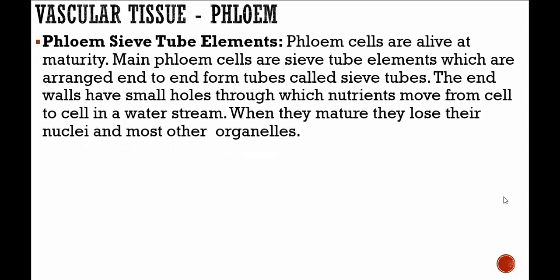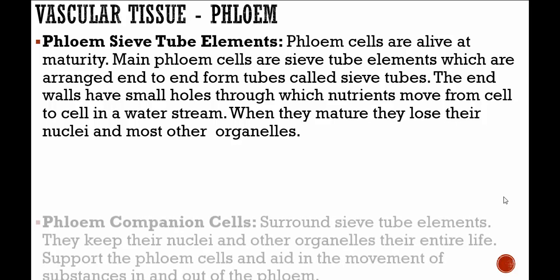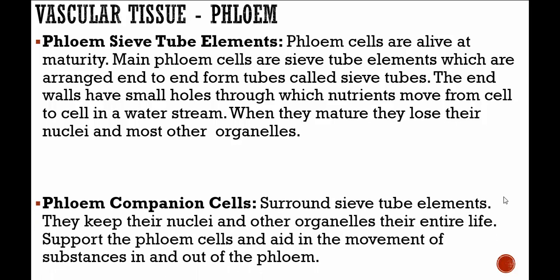Phloem deals with food. The main phloem cells are sieve tube elements, which are arranged end to end to form tubes called sieve tubes. The end walls have small holes through which nutrients move from cell to cell in a water stream. When they mature, they lose their nuclei and most other organelles. The phloem companion cells surround sieve tube elements, keep their nuclei and organelles their entire life, and support the phloem cells, aiding movement of substances in and out of the phloem.